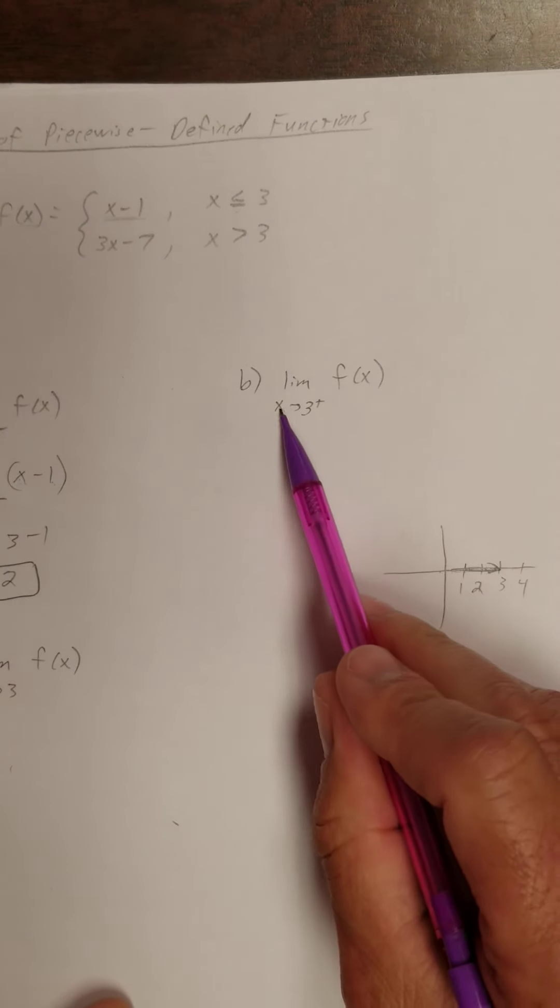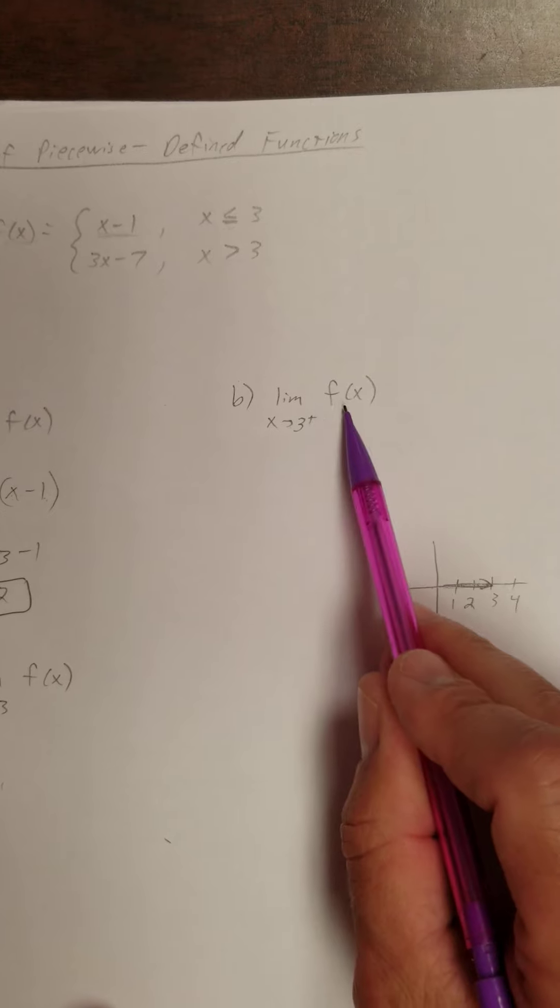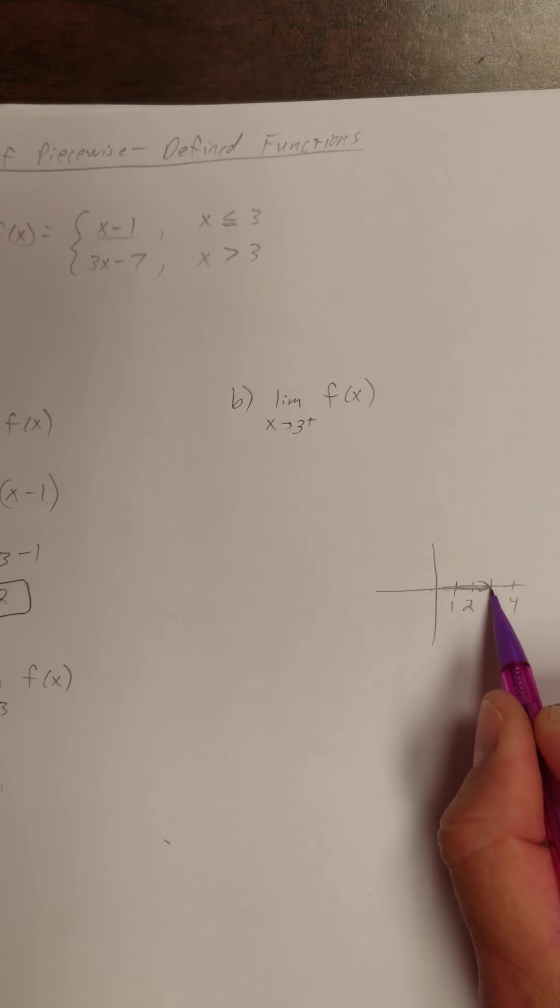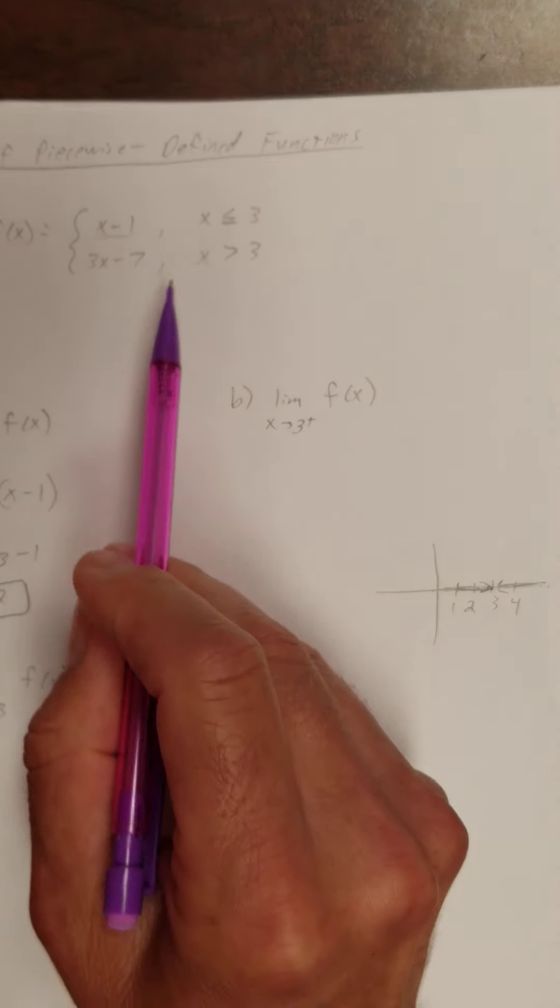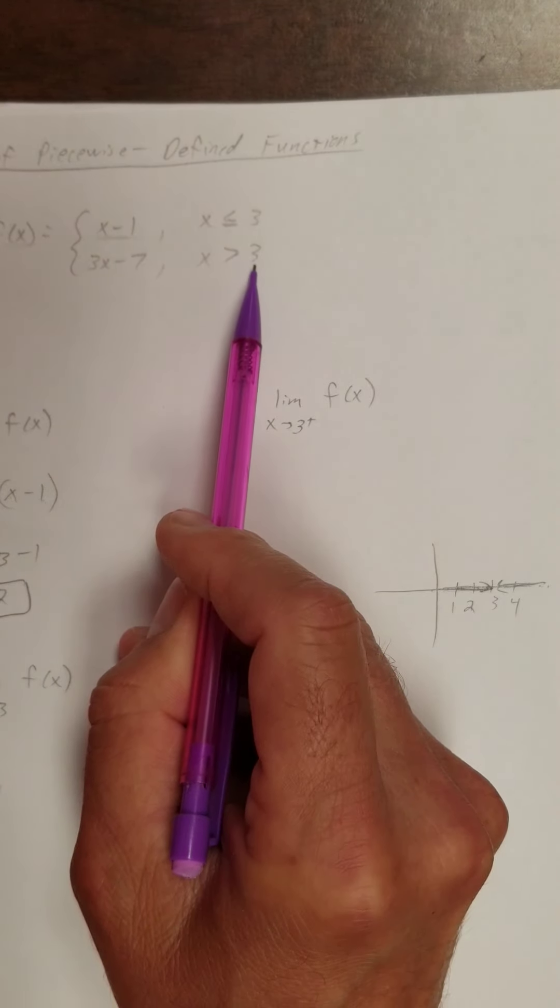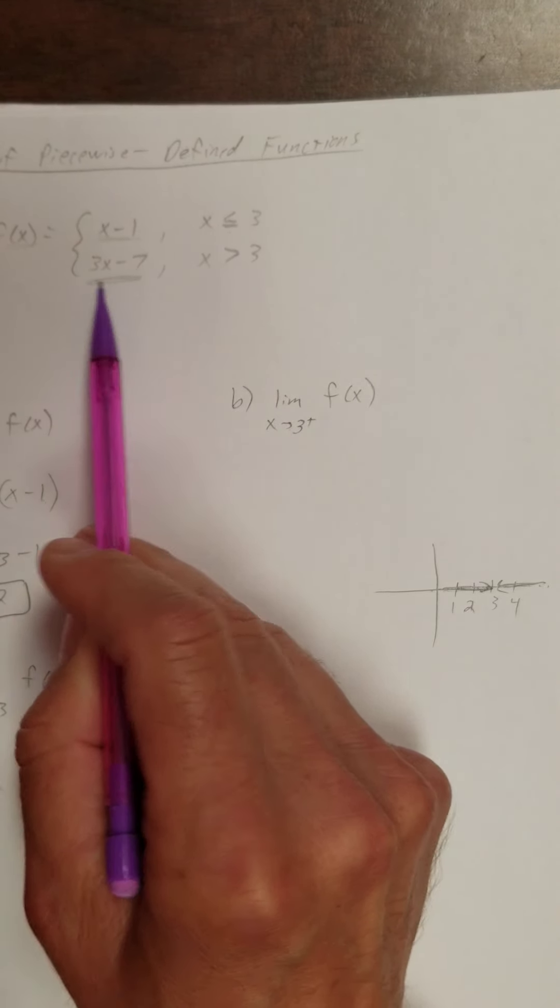How about b? Limit as x approaches 3 from the right of f(x). Think about 3 here. If I'm approaching from the right, I'm looking at values that are out here greater than 3. So I'm looking at x values that are greater than 3, so I'm going to use this piece of my function.